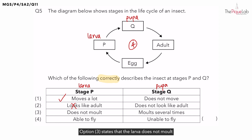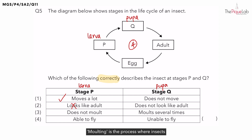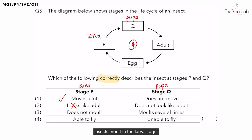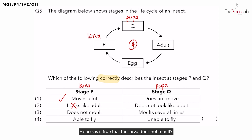Option 3 states that the larva does not moult and the pupa undergoes moulting. Moulting is the process where insects shed their hard outer covering to grow bigger. In which stage of the 4-stage life cycle do insects moult? Insects moult in the larva stage, as the larva feeds a lot and grows bigger during this stage. Is it true that the larva does not moult? No — the larva does undergo moulting. Is it true that the pupa moulting? No, the pupa does not moult.